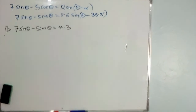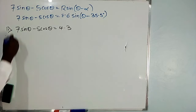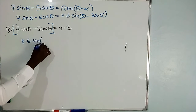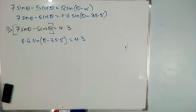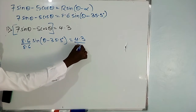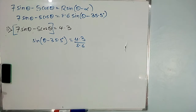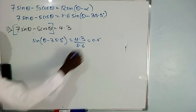For the second part: solve the equation 7 sin theta minus 5 cos theta = 4.3. Since 7 sin theta minus 5 cos theta = 8.6 sin(theta minus 35.5°), we substitute: 8.6 sin(theta minus 35.5°) = 4.3. Divide both sides by 8.6, so sin(theta minus 35.5°) = 0.5.